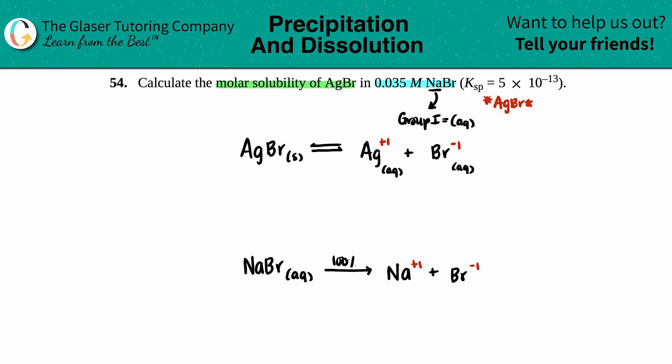Since it dissociates 100% and there's no Ksp going along with it, we can use our mole ratios to find out what the molarities are for the two ions. Since everything is a one to one to one relationship, whatever I started with would be the same number for each of these ions. So this would be 0.035 molarity and this would be 0.035 molarity.